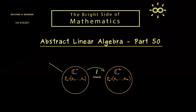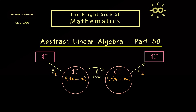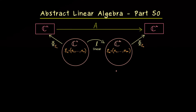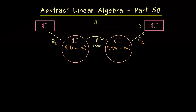The corresponding basis isomorphisms are just given by the identity maps, so not much happens here — we just map to C^N and C^M trivially. It makes sense to distinguish these two levels, because on the concrete level we have our matrix representation A. In general, this is a rectangular matrix and the singular value decomposition wants to diagonalize that one.